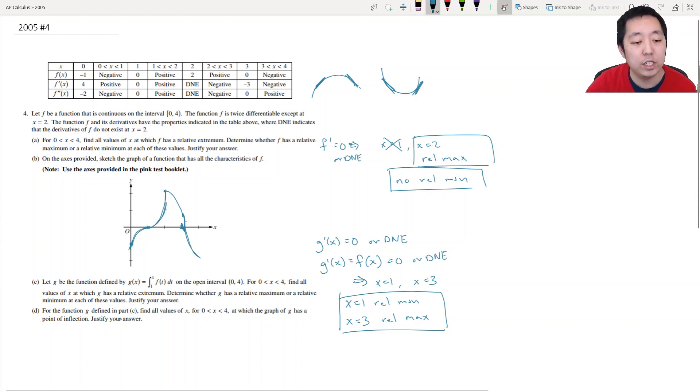For the function g defined in part c, find all the values of x between 0 and 4 which the graph g has a point of inflection and justify your answer. Inflection points are where concavity changes. So that means the second derivative changes and that happens at x equals 1 and 3. Those are points of inflection because concavity, which is the second derivative of x, changes. Changes signs or changes from positive to negative.